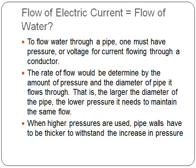Now, for water, the rate of flow would be determined by the amount of pressure and the diameter of pipe it flows through. That is, the larger the diameter of the pipe, the lower pressure it needs to maintain the same flow.